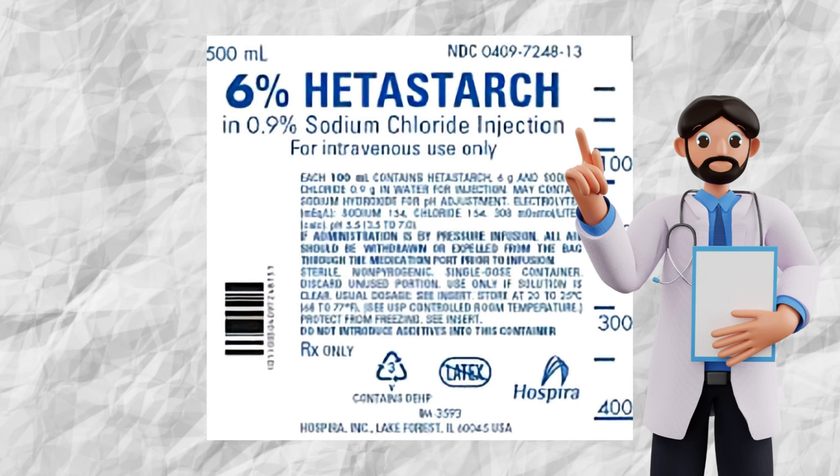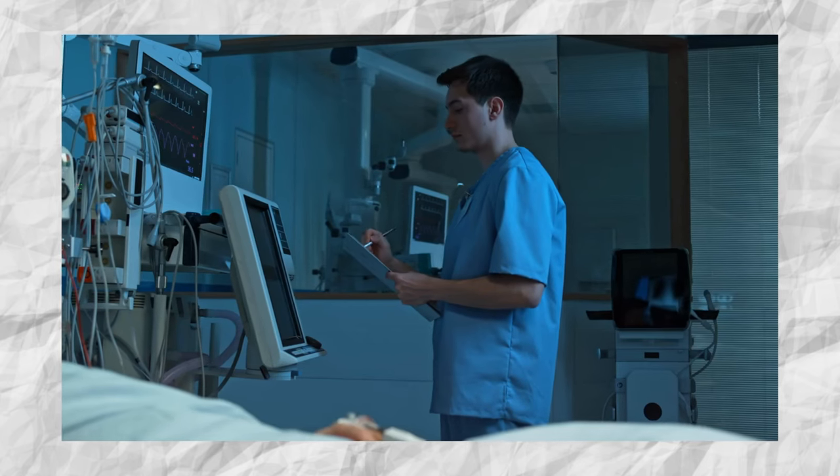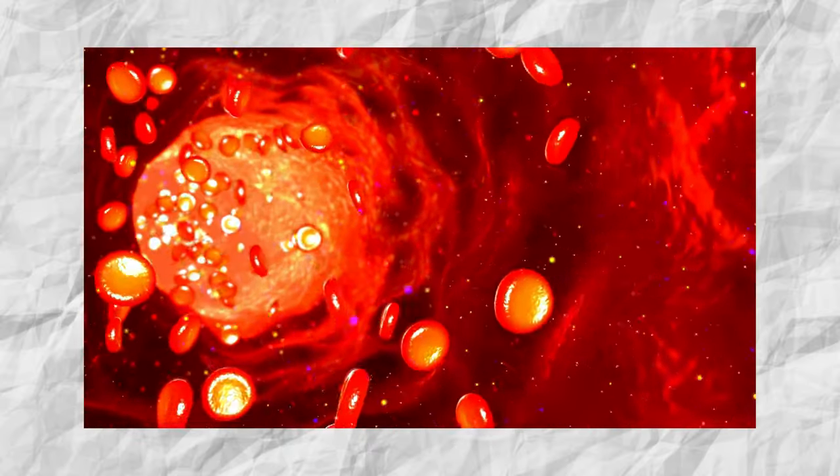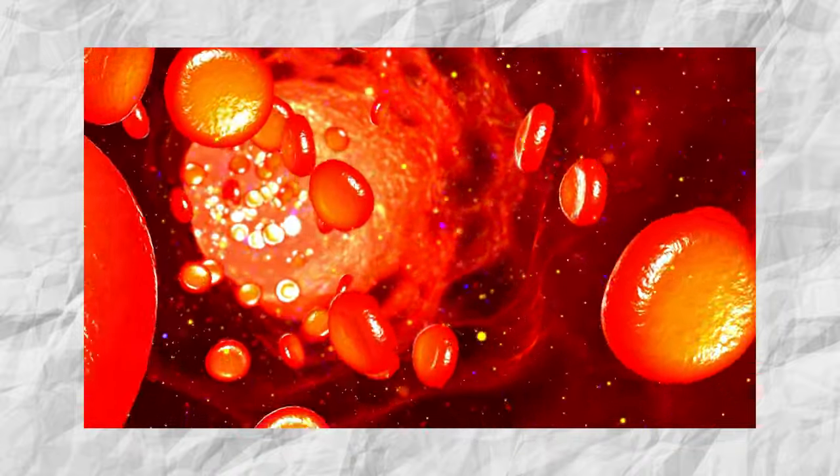Hydroxyethyl starches, or hetastarch solutions, have become much more selective in use in recent years due to safety concerns, including renal impairment, as this solution has a high potential to cause acute kidney injury especially in patients with pre-existing renal impairment or those at increased risk due to sepsis. Hetastarch solutions can also impair blood coagulation and platelet function, increasing the risk of bleeding, and this effect can persist for several days after administration. Careful consideration of benefits versus risks is warranted.